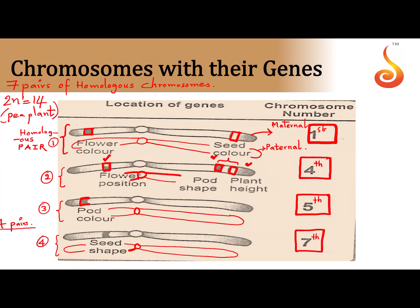The fifth pair has only one gene which we are concerned with, that is the pod color. There are of course many other genes which Mendel did not study — we are only concerned about the characters Mendel studied. So the fifth pair has a gene which controls the pod color. Notice how the seventh pair also has only one gene sitting on it which controls the seed shape. So the first pair has genes for flower color and seed color, the fourth pair has genes for flower position, pod shape, and plant height, the fifth pair has the gene for pod color, and the seventh pair has the gene for seed shape.